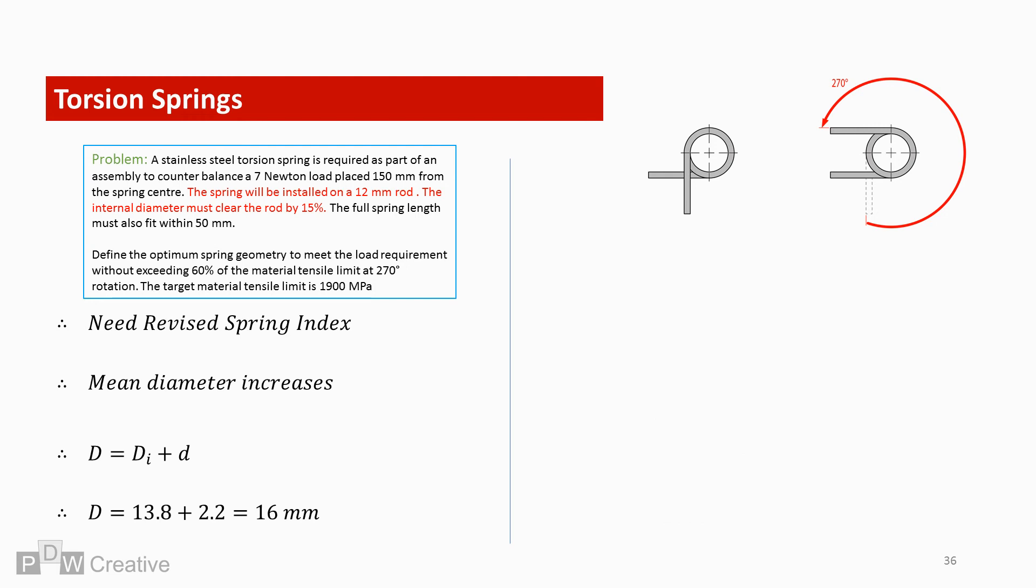To find the revised spring index, let's quickly find the new mean coil diameter. DI remains unchanged as it's the minimum diameter target, but the mean diameter increases to 16. The spring index is reduced from 7.57 to 7.27. This is still acceptable. The index is still between 4 and 12, so we can continue.